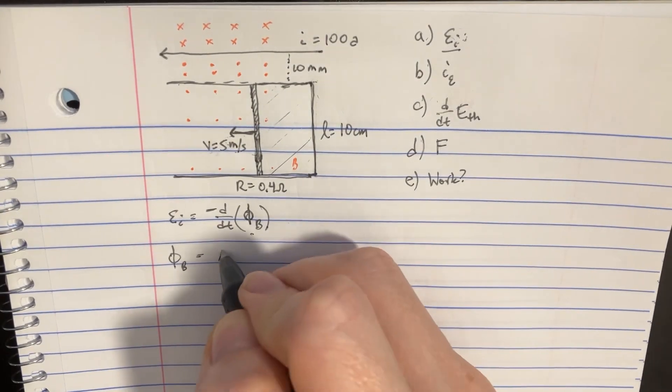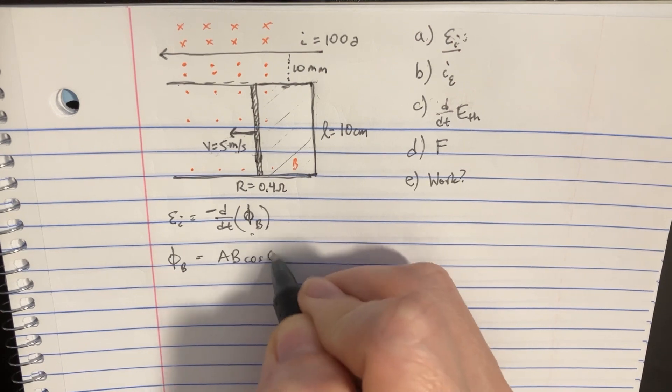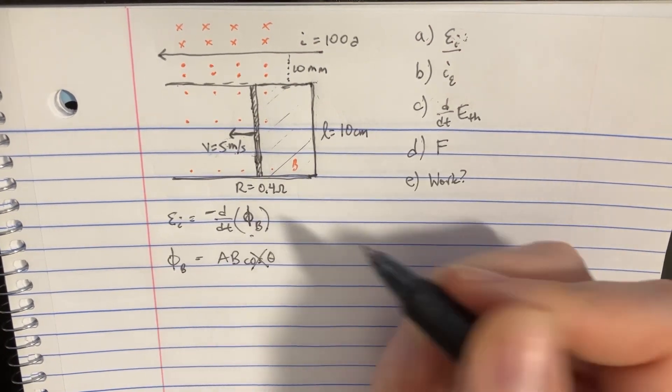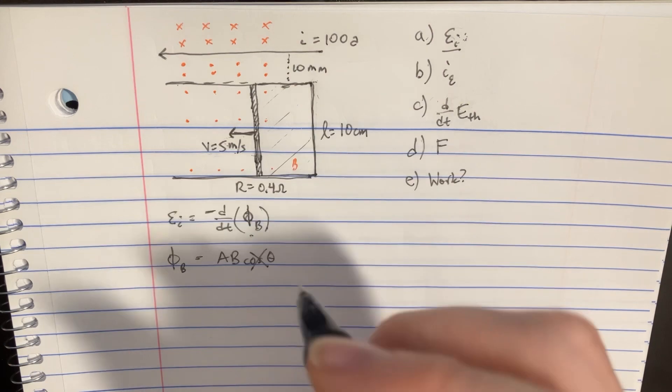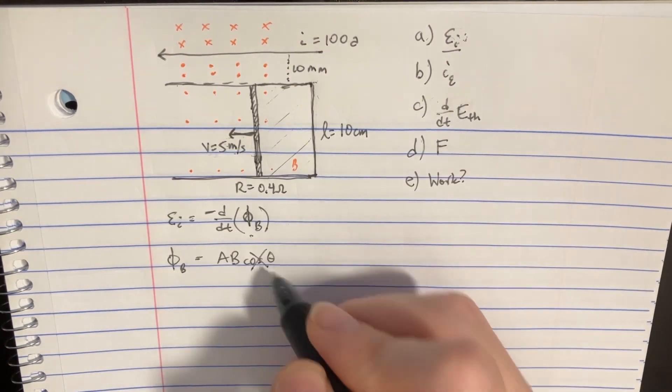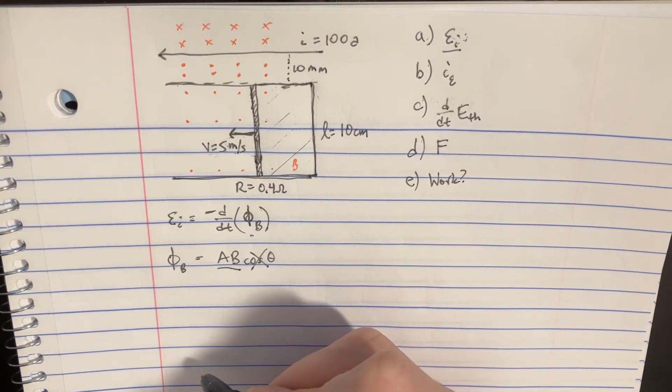The flux is just going to be AB cosine theta. Now the cool thing is, this thing is just going to go away, it's just going to be 1 because it's pointing out of the page, so it's just going to cancel out. So we can focus on this.